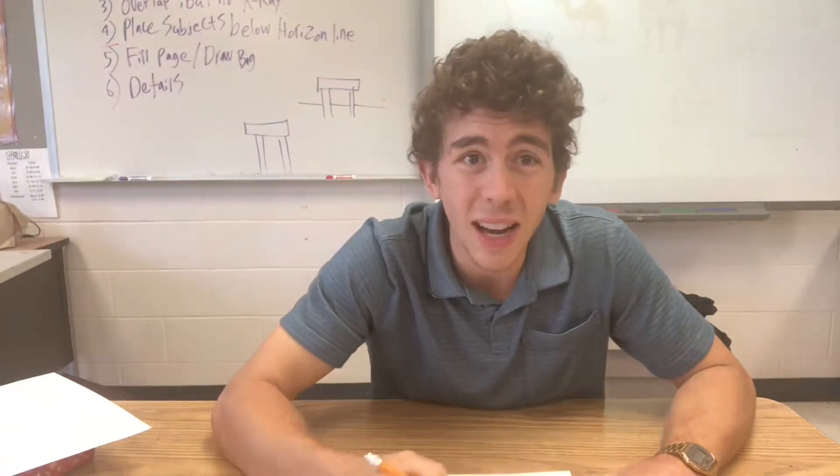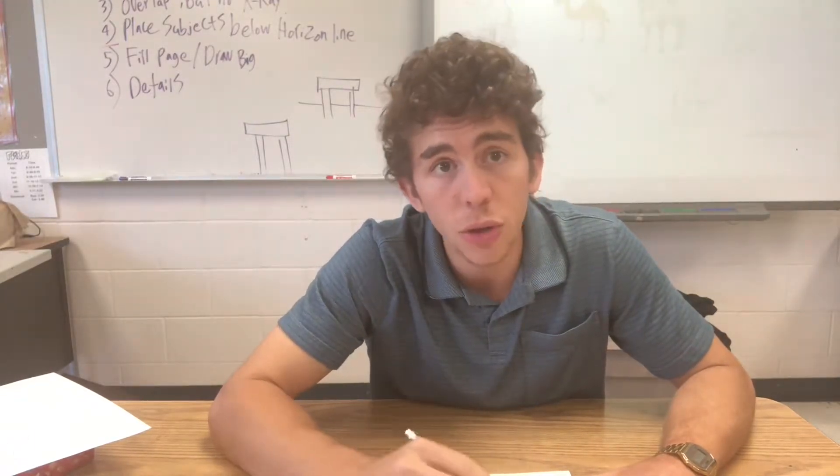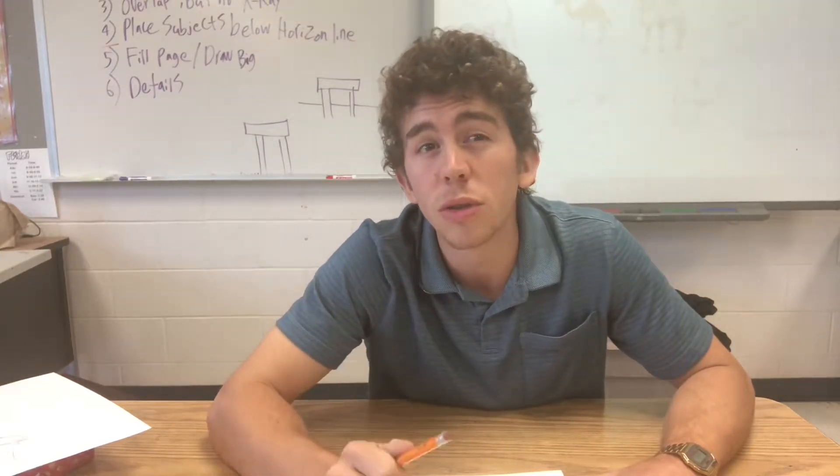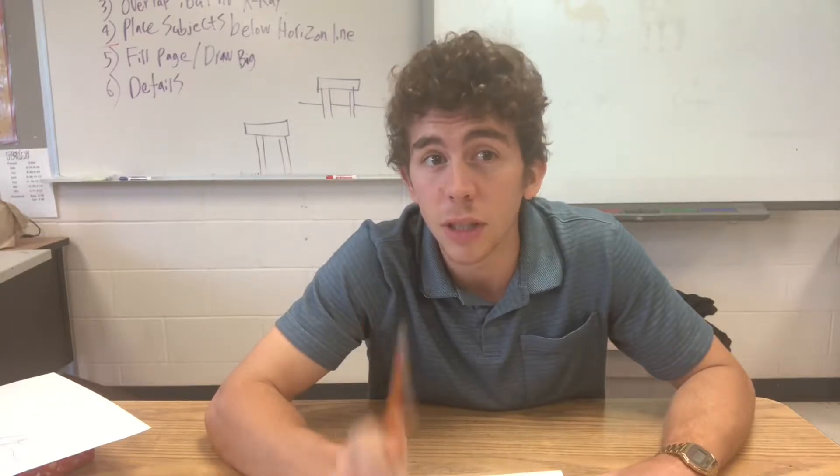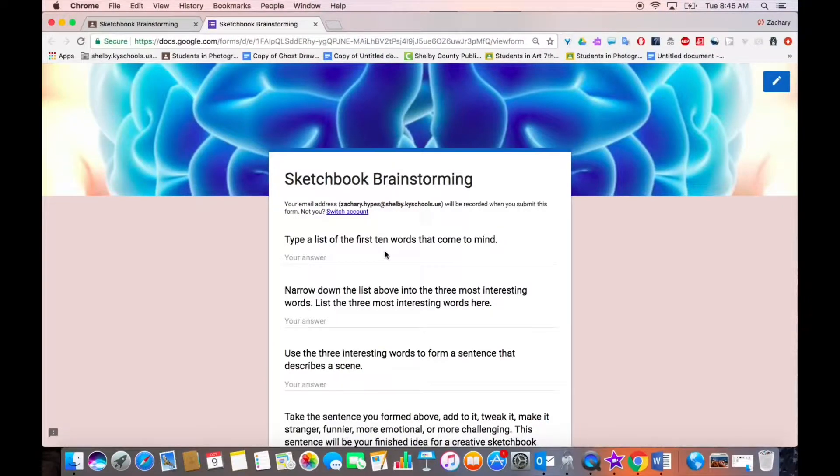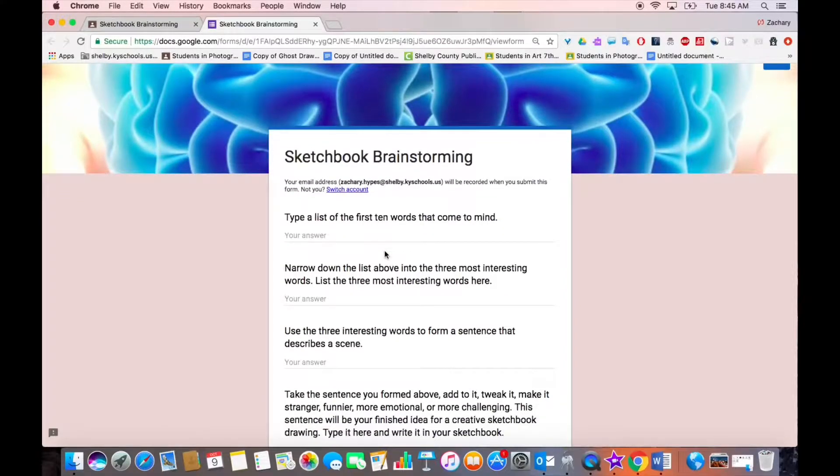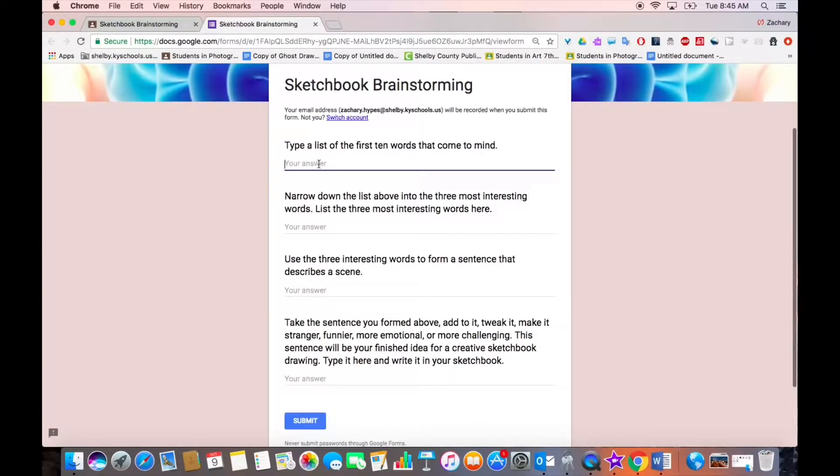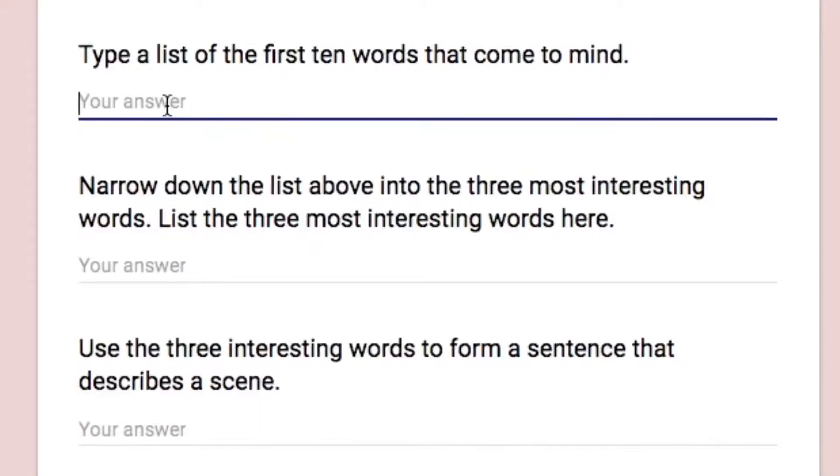So you can start by just writing a list. And we're going to do this digitally on the Chromebooks, but you can start by just writing a list of the first 10 words that pop into your head. And then we're going to use those 10 words to come up with a creative idea for a sketch. So let's go over to the computer and try this out. After this video, I'll put a Google classroom code on the board. You can log on to that classroom and click the sketchbook brainstorming assignment to open this form. The first question on the form says to type a list of the first 10 words that come to mind. Remember to just relax your mind and just start typing. Any 10 words that come to mind will be perfect.